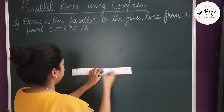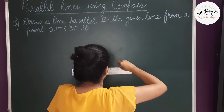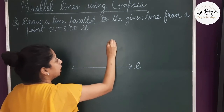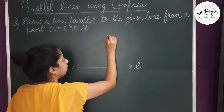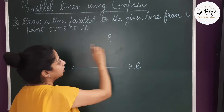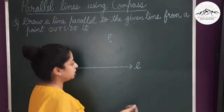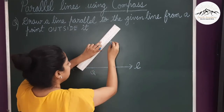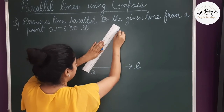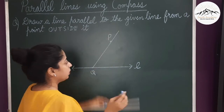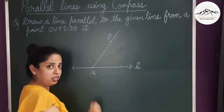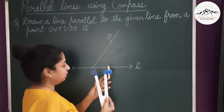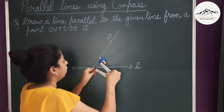Now let's first make a line L. So suppose this is the line L. We have to take any point P and from this point draw another line parallel to this line. For this, first take any point Q on line L and join points P and Q. You can take Q anywhere on the line. Now take your compass and open it to any desired length. Keeping the pointer at Q, draw an arc.